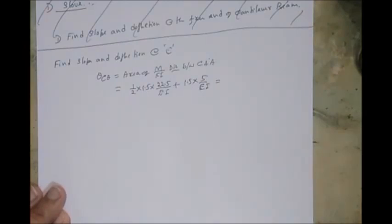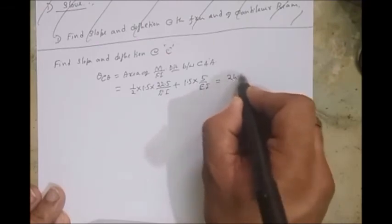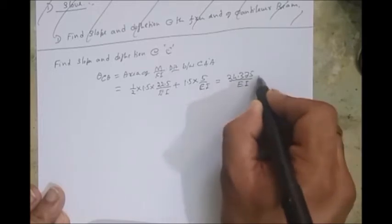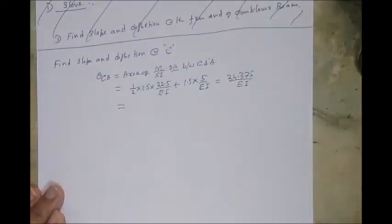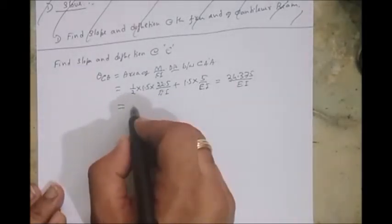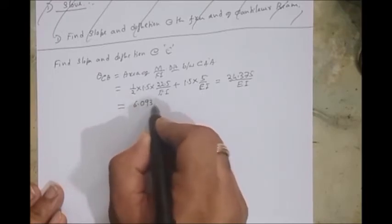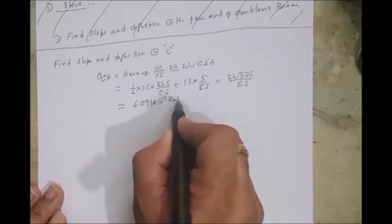Which is equal to, so just calculate it. Half into 24.375 by EI. So substitute the value of EI, you will be getting 6.093 into 10 to the power minus 3 radians.